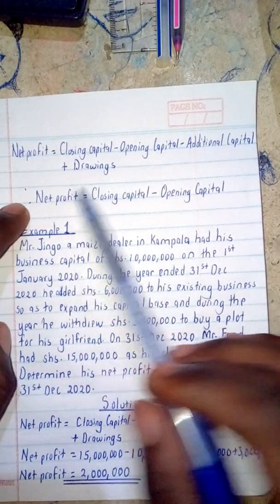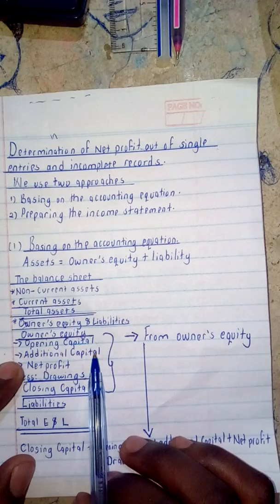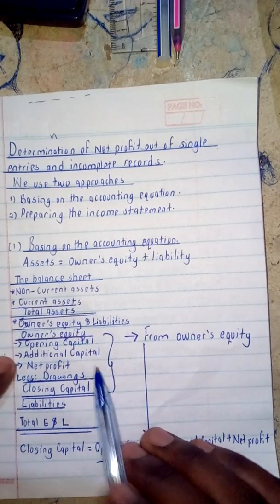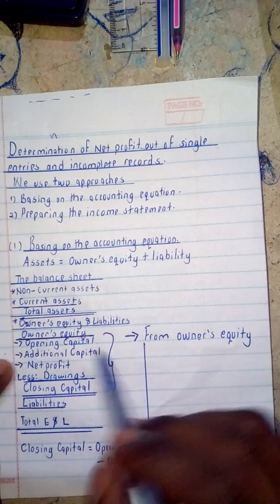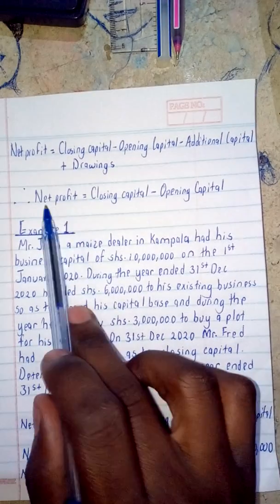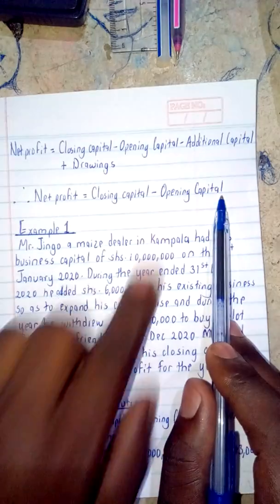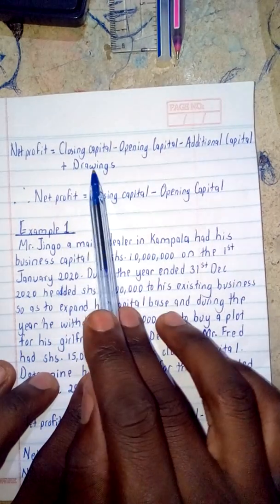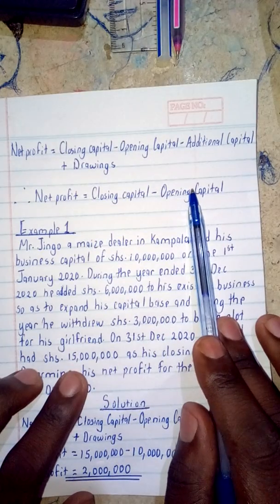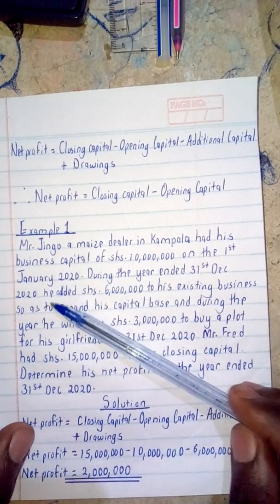Note that additional capital and drawings are not constant — you may not always have them in a question. If neither is present, the formula simplifies to: Net Profit = Closing Capital − Opening Capital. However, closing capital and opening capital must always be present.